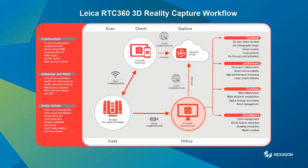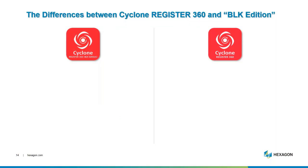So on this journey, this is where we are — Cyclone Register 360. We're in the office stage now, getting the data registered and prepared for publishing further downstream. We have a new version of Cyclone Register 360 called the BLK Edition, and a lot of people have been asking about this, so I want to make sure you're aware of the differences between the products before we move through the rest of the presentation.